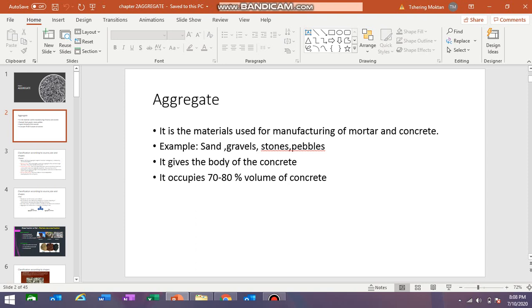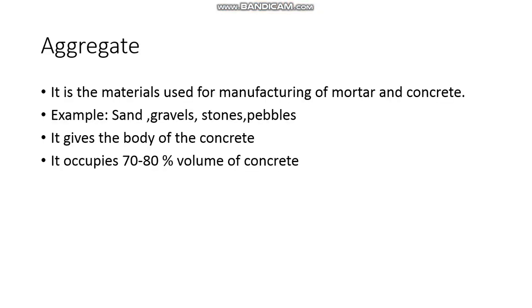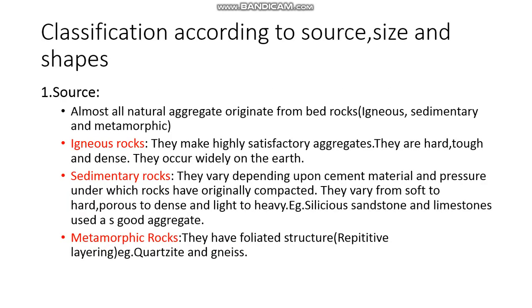Aggregates occupy almost 70 to 80% of the concrete volume. So out of the whole volume of concrete, the aggregate portion is 70 to 80%. Now let us classify aggregates according to source, size, and shape. We are going to classify and differentiate them. Let us start with source.